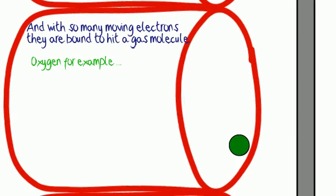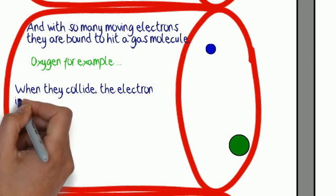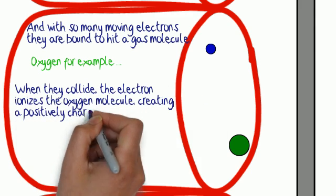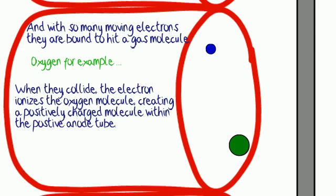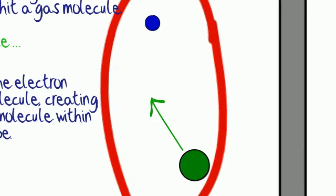Here's our oxygen molecule in green, our electron. Those two are actually in motion, and they're going to collide. When they collide, they're going to create a positively charged ion.